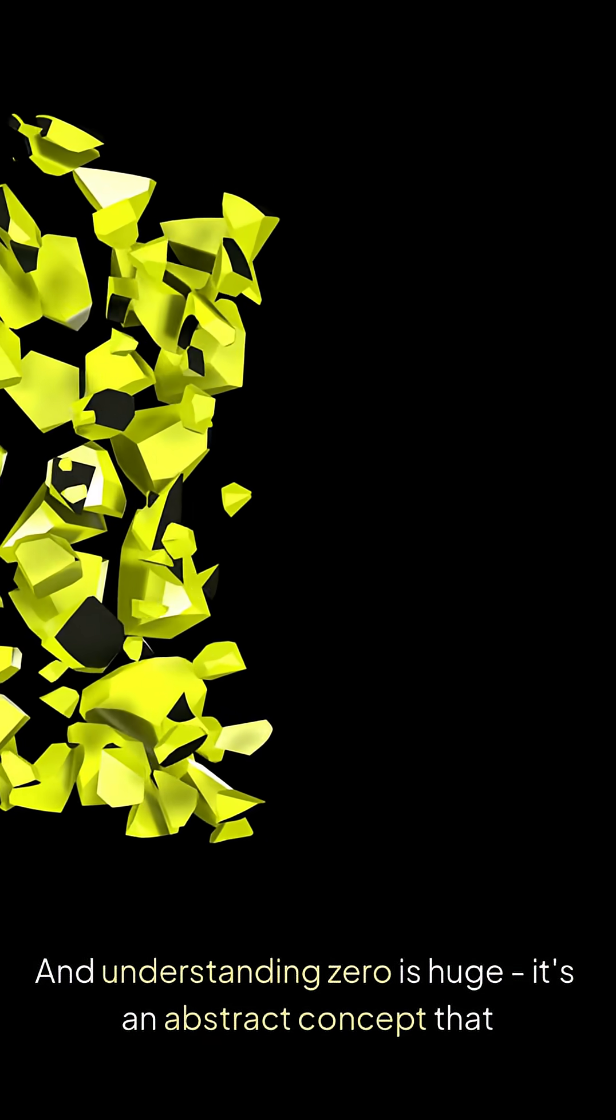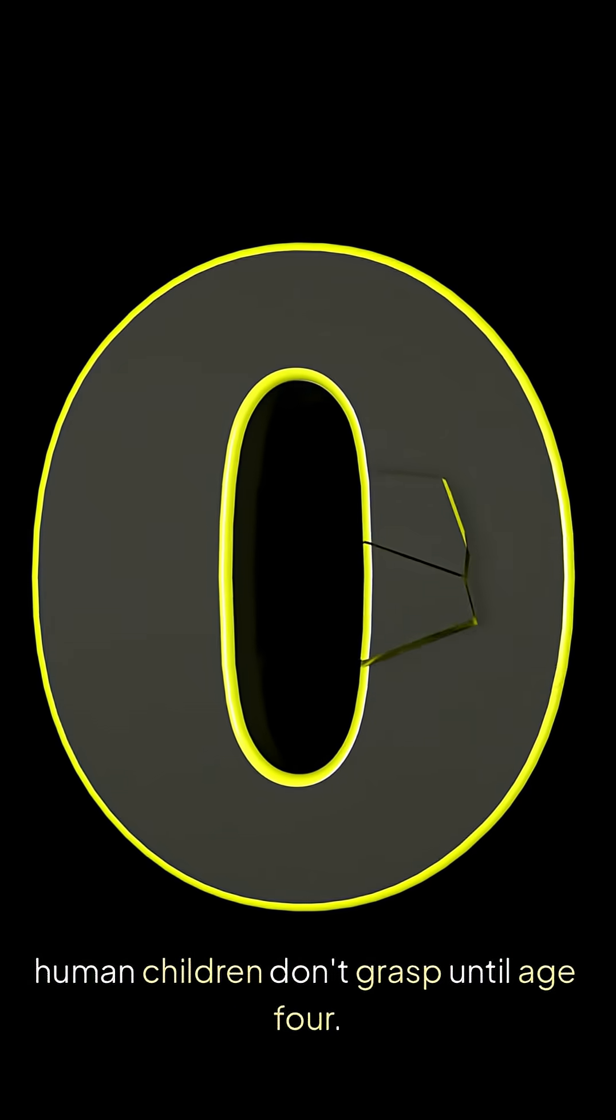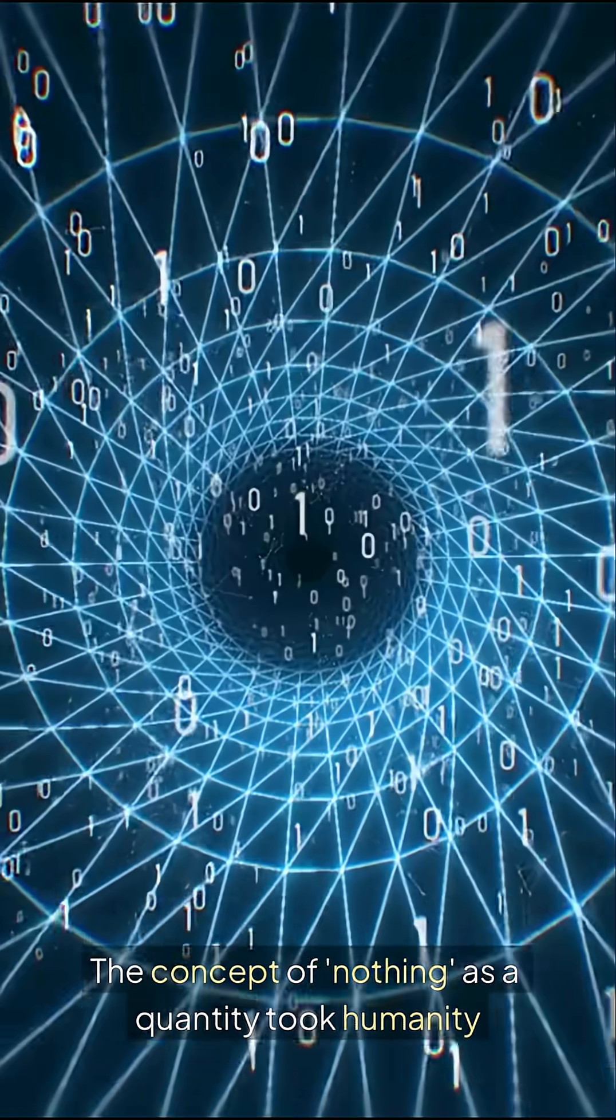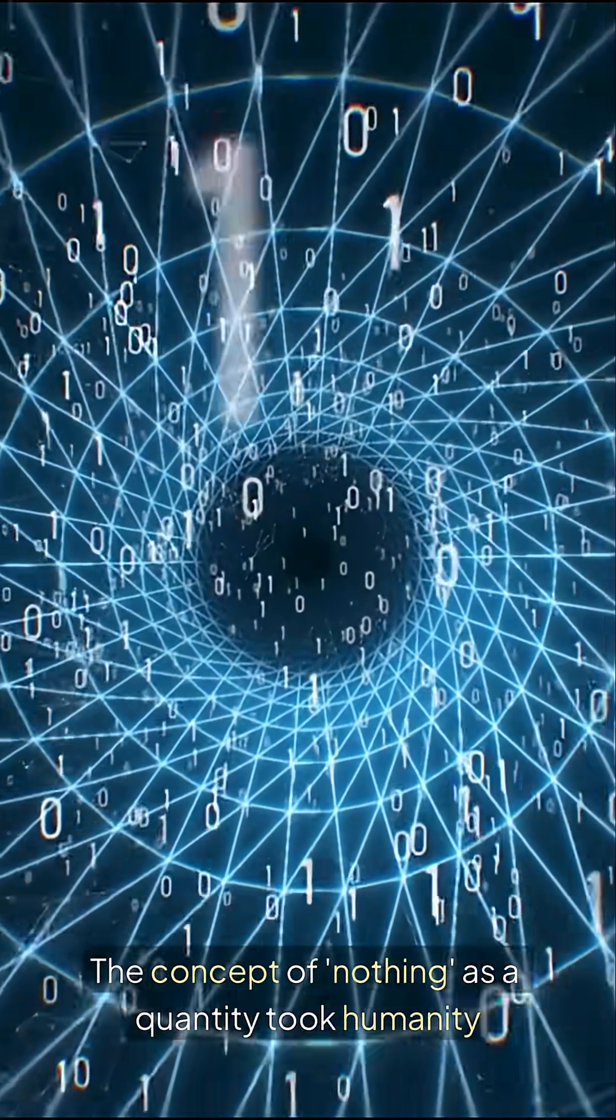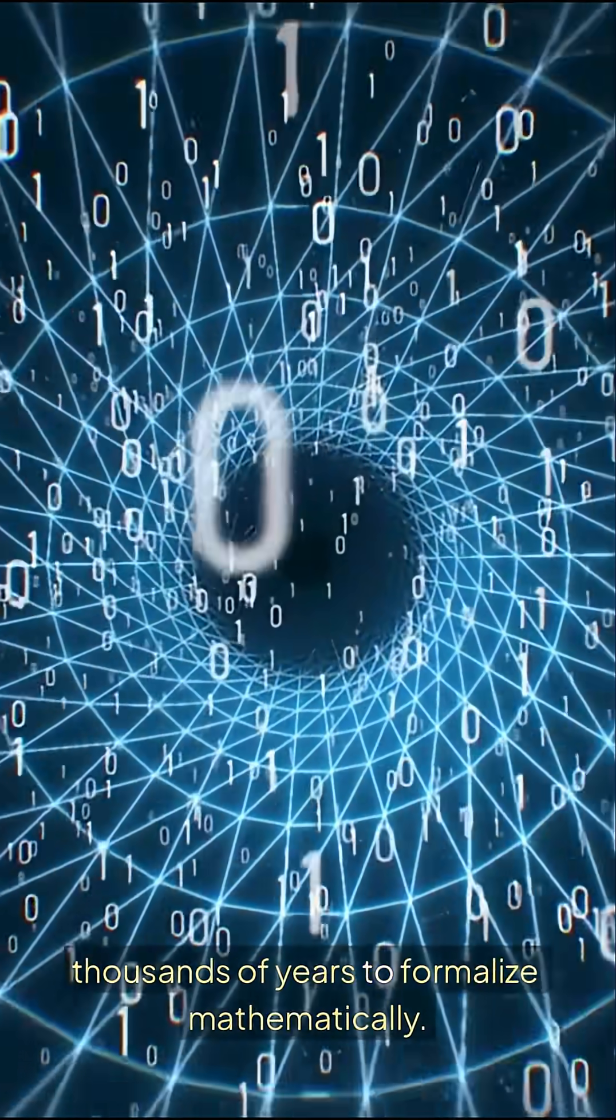Humans have 86 billion neurons, and understanding zero is huge. It's an abstract concept that human children don't grasp until age four. The concept of nothing as a quantity took humanity thousands of years to formalize mathematically.